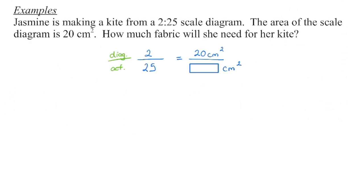So in our first example, we're given a scale of 2 to 25 units. I would write that as a fraction. We know that the first number is the diagram measure and the second number is the actual measure. We're told the area of the scale diagram is 20 centimeters squared — the units give you a clue. So I'm going to put the same unit on the same line: this is the diagram measure. I'm looking for the actual measure because that will indicate how much fabric I need to make the kite.